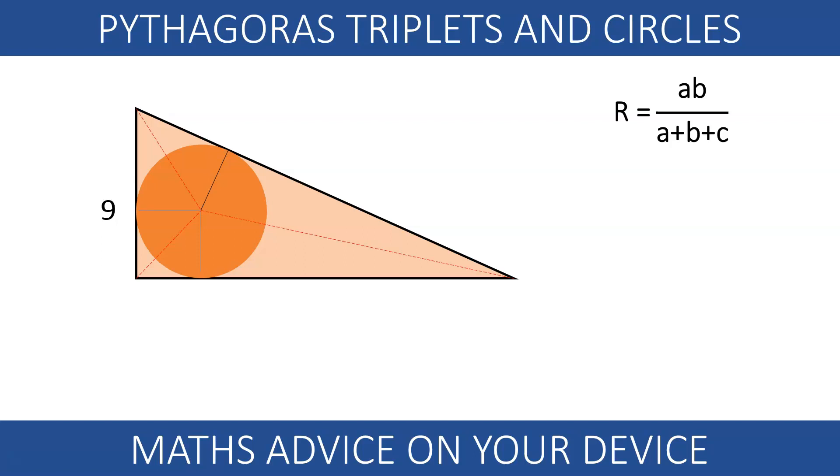On that video we figured out that we can always make a triplet by using an odd number as the shortest side. The other two sides are consecutive numbers. We want the radius of the circle to be 4.